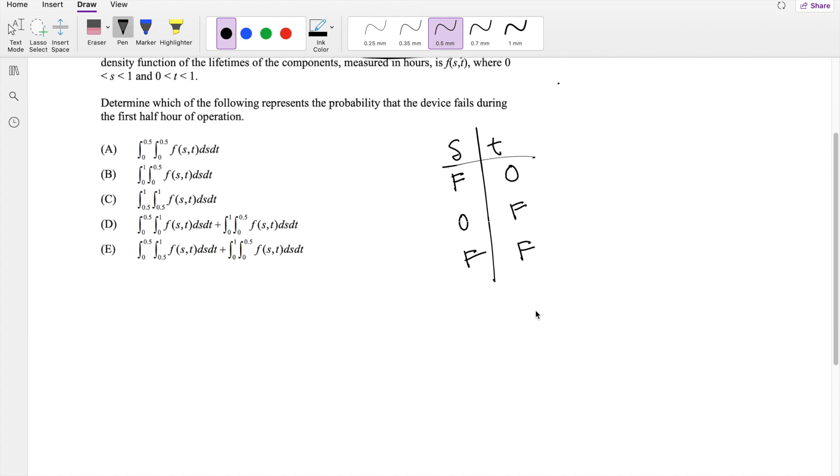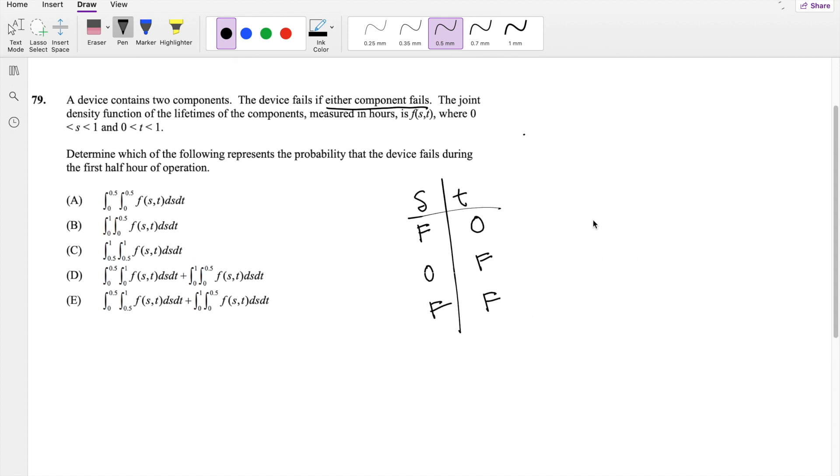And the joint density function is F of ST, where S and T are between 0 and 1. So this is 1, 1, and let's say this is S and this is T.